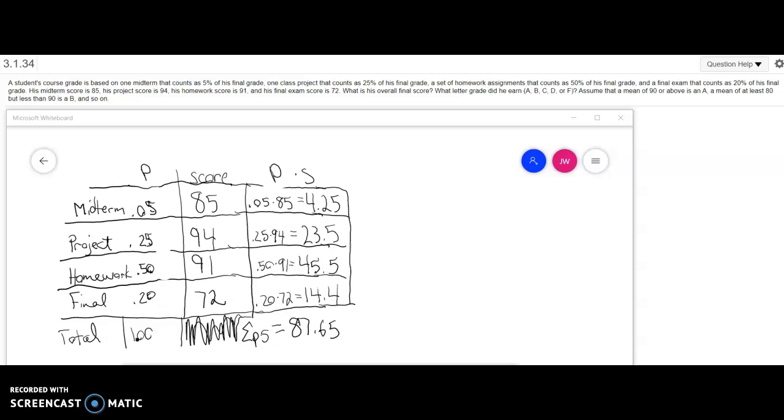His midterm score is 85, his project score is 94, his homework score is 91, and his final exam score is 72. What's his overall final score and what letter grade did he earn? That's what we're trying to find.